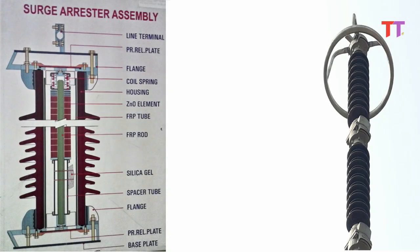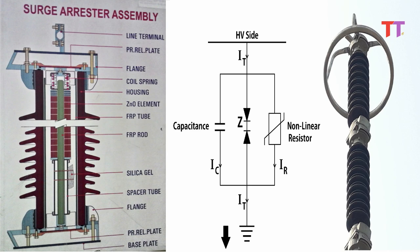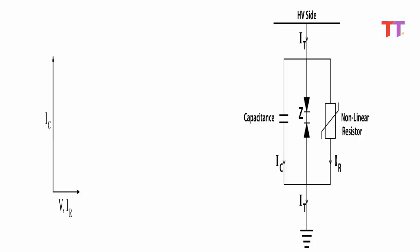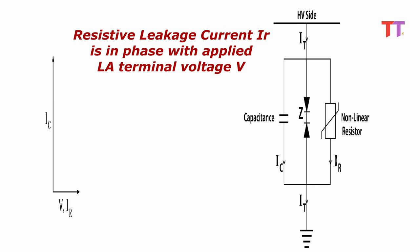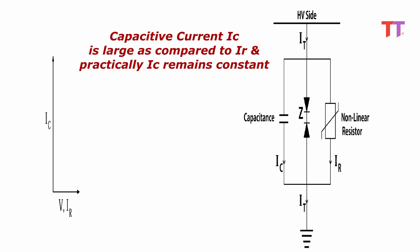To understand this further, we represent LA with an equivalent circuit diagram. The top end line terminal of the LA is connected to a high voltage line, and the LA ground terminal is connected to the earth. We can see both capacitive current IC and resistive current IR adding to total leakage current IT. As in the phasor diagram, resistive leakage current IR is in phase with applied LA terminal voltage. Capacitive current IC leads IR by 90 degrees. Capacitive current IC is large as compared to IR, and practically IC remains constant.